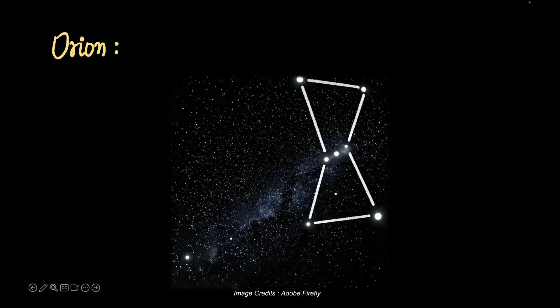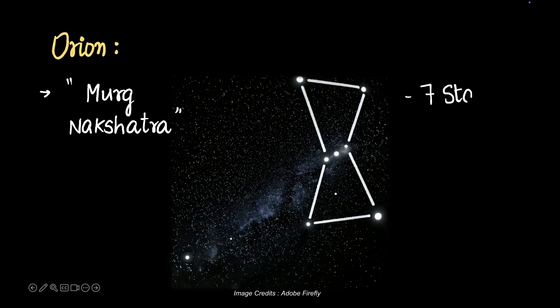Okay, next we've got the Orion. In India it's called the Murgh Nakshatra. It's made of seven stars and these three stars in the middle have something interesting. If you follow the line of those three stars, you would end up at another bright star. Nope, this is not the Polestar this time. This is another star called Sirius or Vyad—Vyad in India and Sirius is the western name.